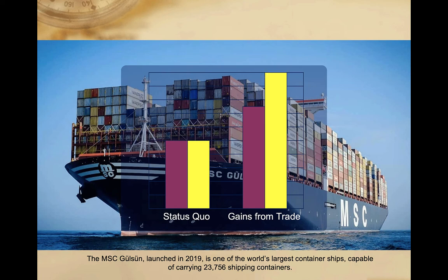Your answer to this question depends on how you view the nature of those gains from trade — that is, whether you're looking at absolute or relative gains. In absolute terms, your country is better off than it was before, or at least its economy is larger than it was before. Your economy has grown by 50% and your trading partner's has grown by 100%. Both of you are better off than you were before the deal in absolute terms.